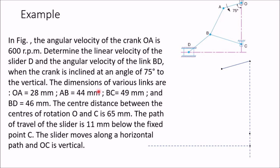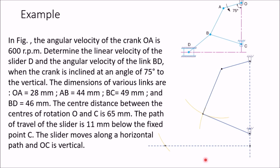From A, the length of AB is given as 44 mm, and BC is given as 49 mm. Draw an arc with center A and length 44 mm. From point C, take 49 mm and draw another arc. Mark the intersection point and join these two lines to get B. Now from B to D, BD is 46 mm. Take center B, length 46 mm, and draw an arc — it intercepts at point D. Mark that point and draw your slider. The configuration diagram is now complete.